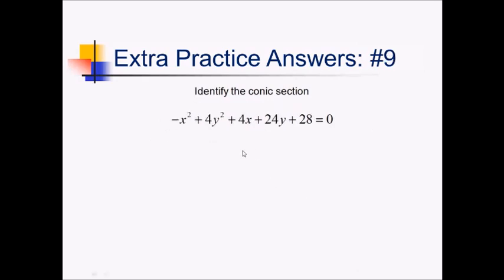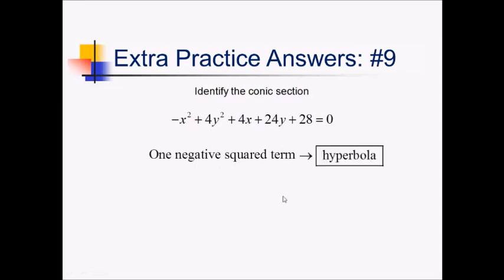On this problem, I notice I've got two squared variables, so it's not a parabola. One of the variables is negative — only one of them is negative. So since I have one negative squared term, that means this must be a hyperbola.